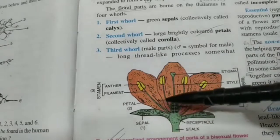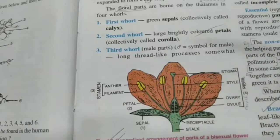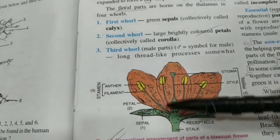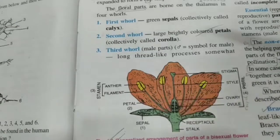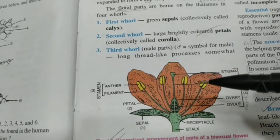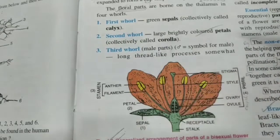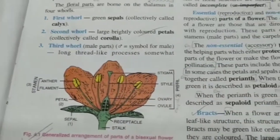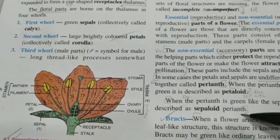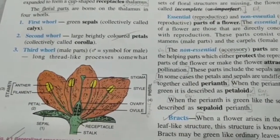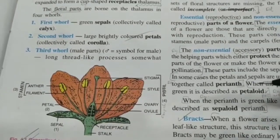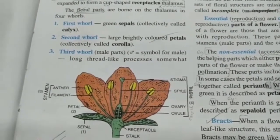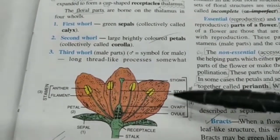Sometimes the sepals and petals are fused together and undifferentiated. Instead of two separate whorls, they may form a single whorl called a perianth. When the perianth is green in colour, it is called a sepaloid perianth. But if the perianth is colourful and non-green, it is called a petaloid perianth.